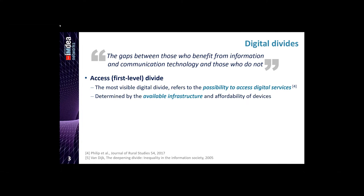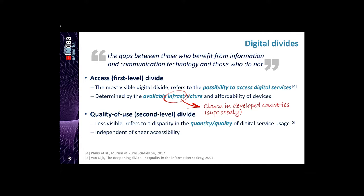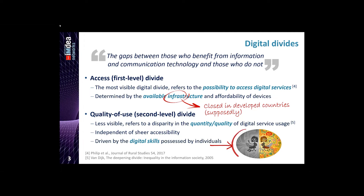The access divide is very easily detectable in any region, and the key information is that it is largely closed in developed countries. The second type of digital divide is quality of use divide, also known as second level divide. This type of divide is very hard to detect because it occurs when there is a disparity in the quantity or quality of use of digital services. It is basically driven by the digital skills that people possess in a region.